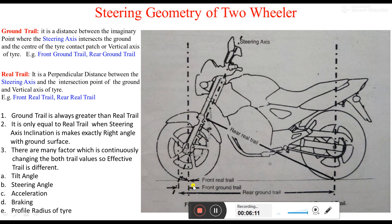If we extend the steering axis, it intersects the ground at some point. The distance between the intersection point of the steering axis with the ground and the intersection point of the vertical axis with the ground is the ground trail. If we calculate this for the front wheel, it is called the front ground trail; if for the rear wheel, it is called the rear ground trail.